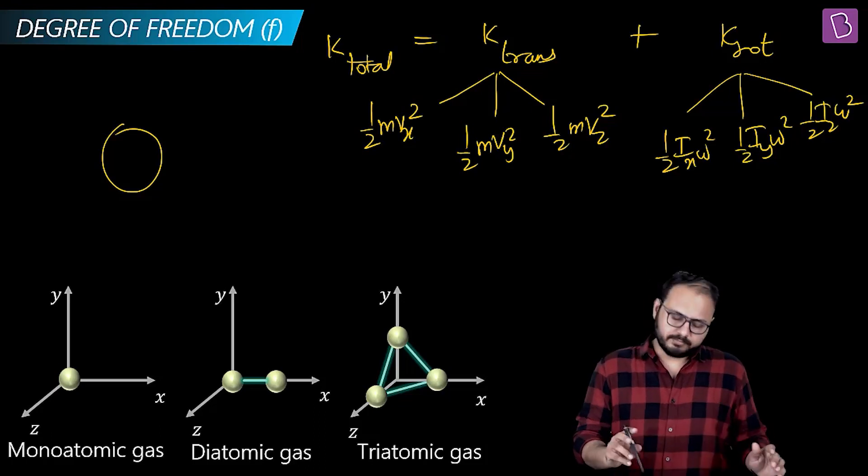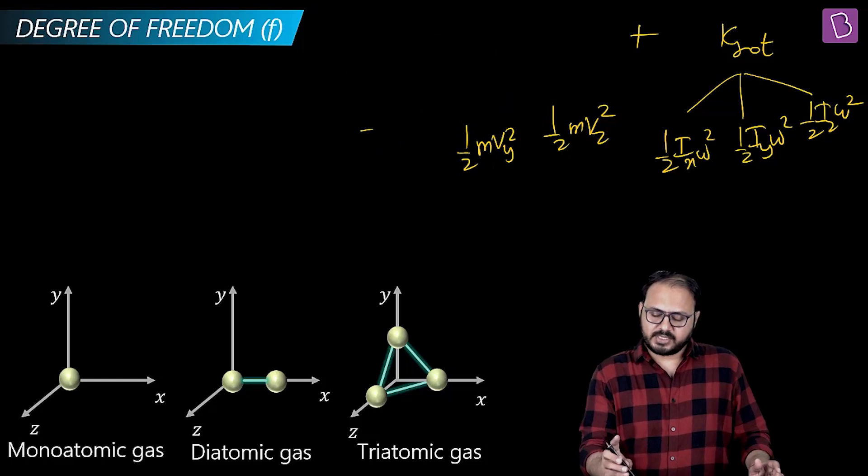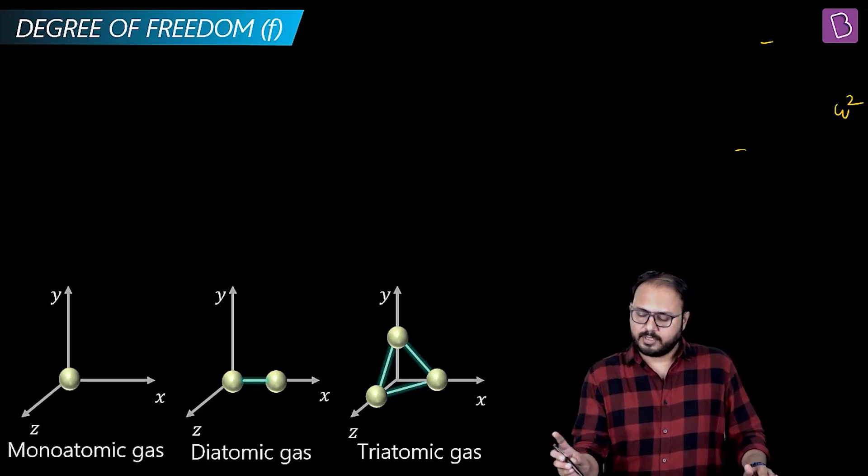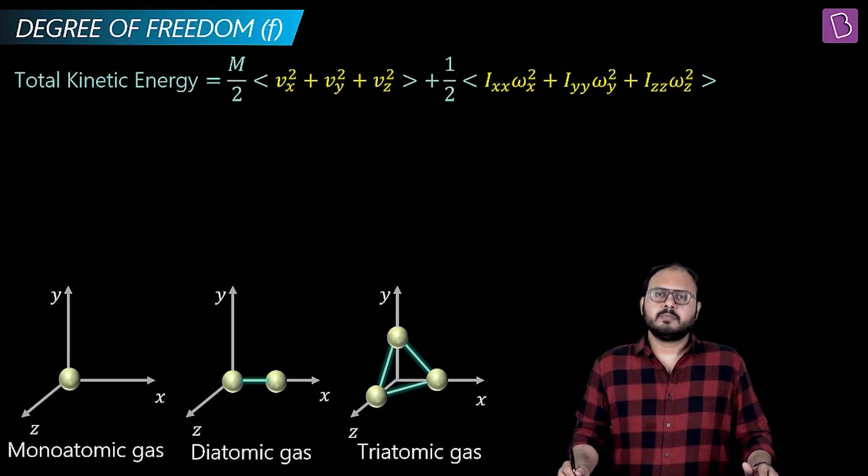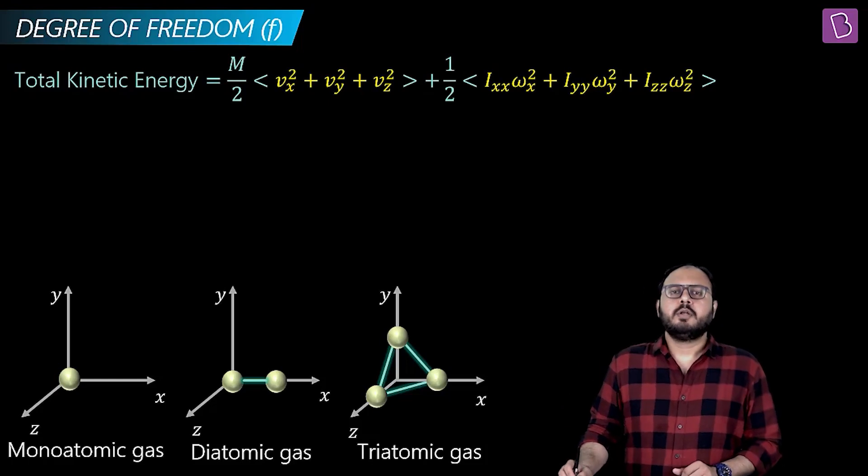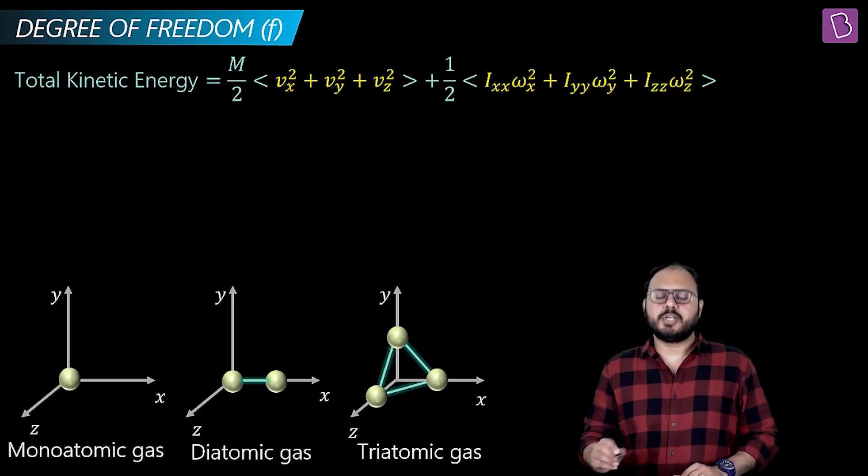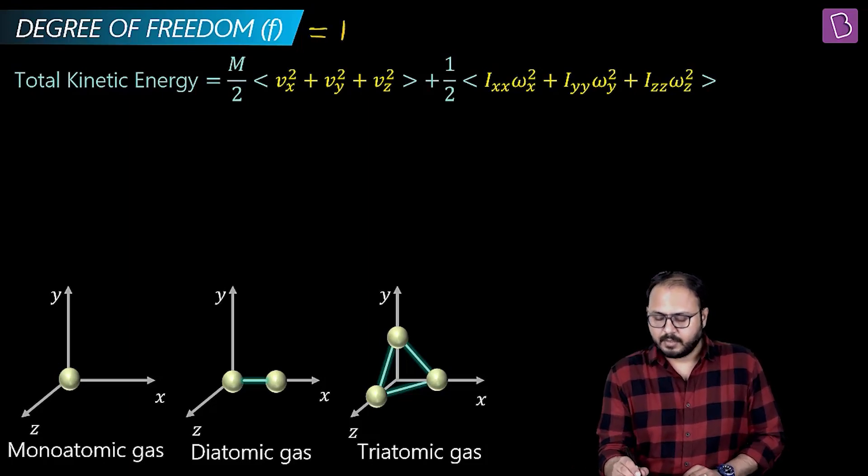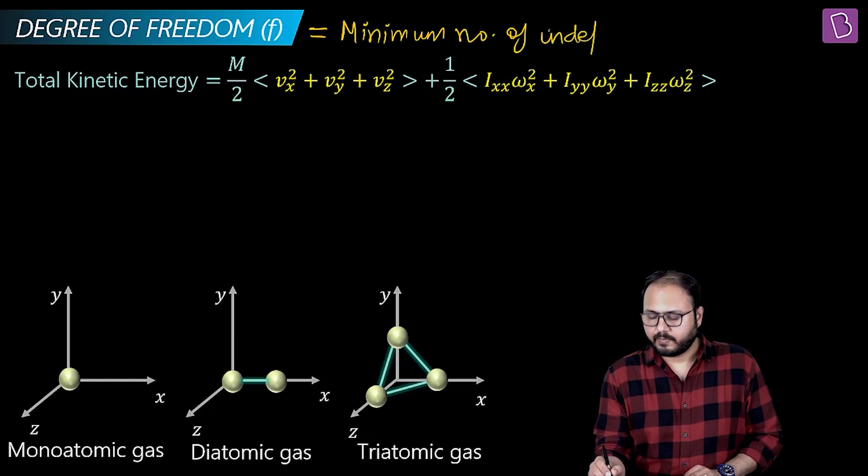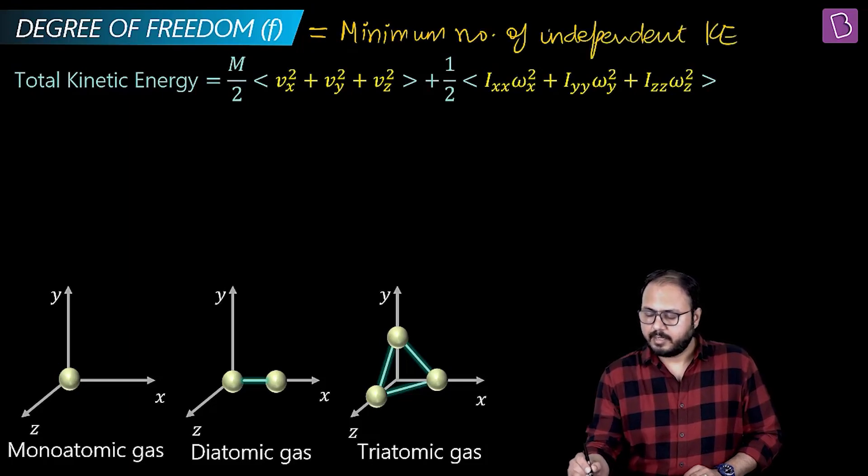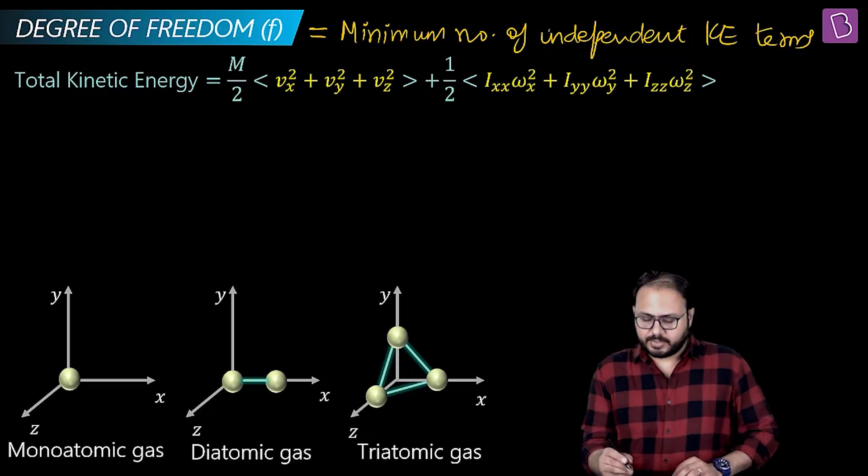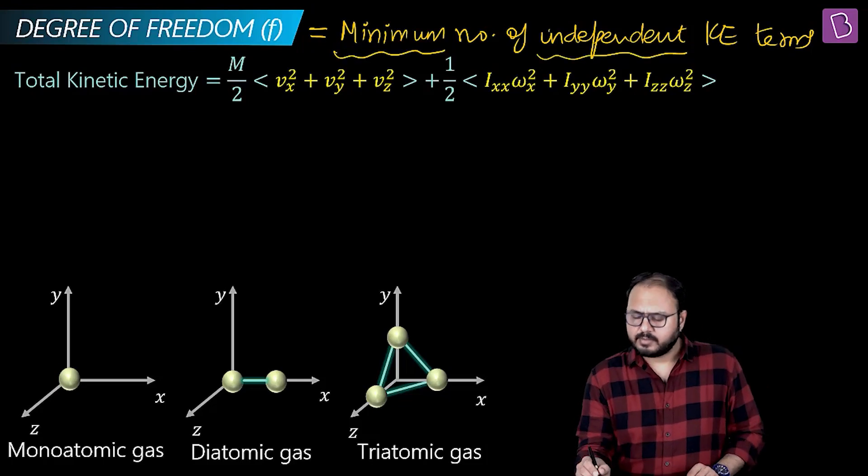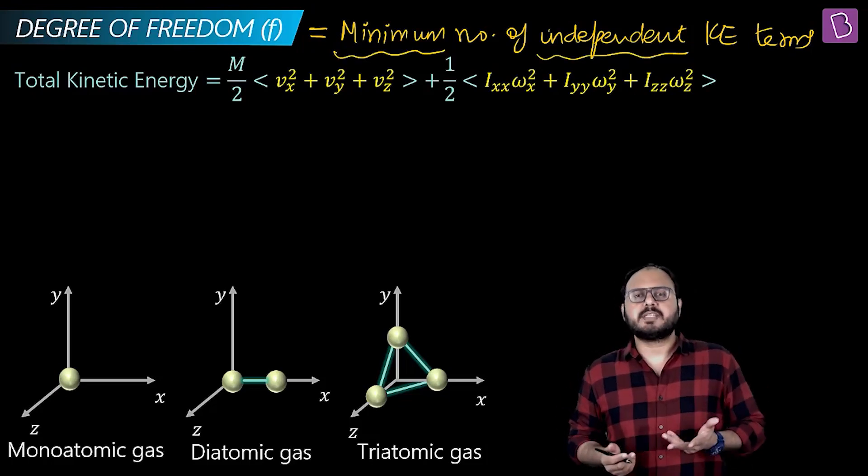But what has that to do with degree of freedom? Fair question. Let's see what we just studied has to do with degree of freedom. Guess what the definition is? Degree of freedom is: write down please. Total number of independent kinetic energy contributions. Degree of freedom is minimum number of independent K terms.